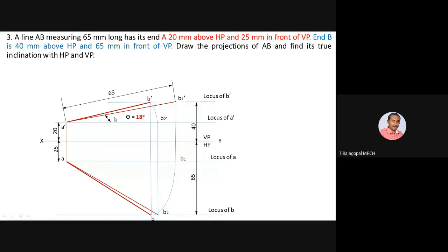For marking dimensions, draw arcs at both ends with arrowheads. If the dimension is too small, place arrowheads outside the line. For true inclination with respect to VP, the inclination of line A-B2 gives phi. Phi equals 38 degrees. Complete the question by noting all answers: true inclination with HP theta = 18 degrees, with VP phi = 38 degrees.